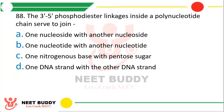Question number 88: The 3'-5' phosphodiester linkage inside a polynucleotide chain serves to join — Option A: One nucleoside with another nucleoside. Option B: One nucleotide with another nucleotide. Option C: One nitrogenous base with a pentose sugar. Option D: One DNA strand with another DNA strand. The correct answer is option B, it joins one nucleotide with another nucleotide.